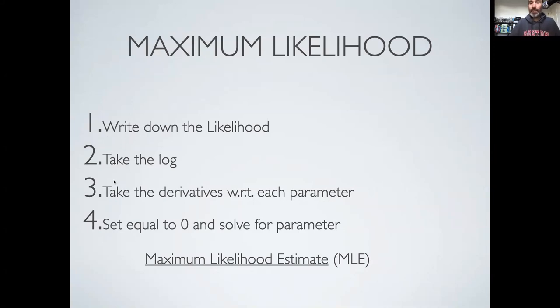We write down the likelihood, then take the log because that makes products turn into sums and makes exponents go away, generally making our math easier. We then take derivatives with respect to each parameter, set them equal to zero, and solve for the maximum likelihood estimate.